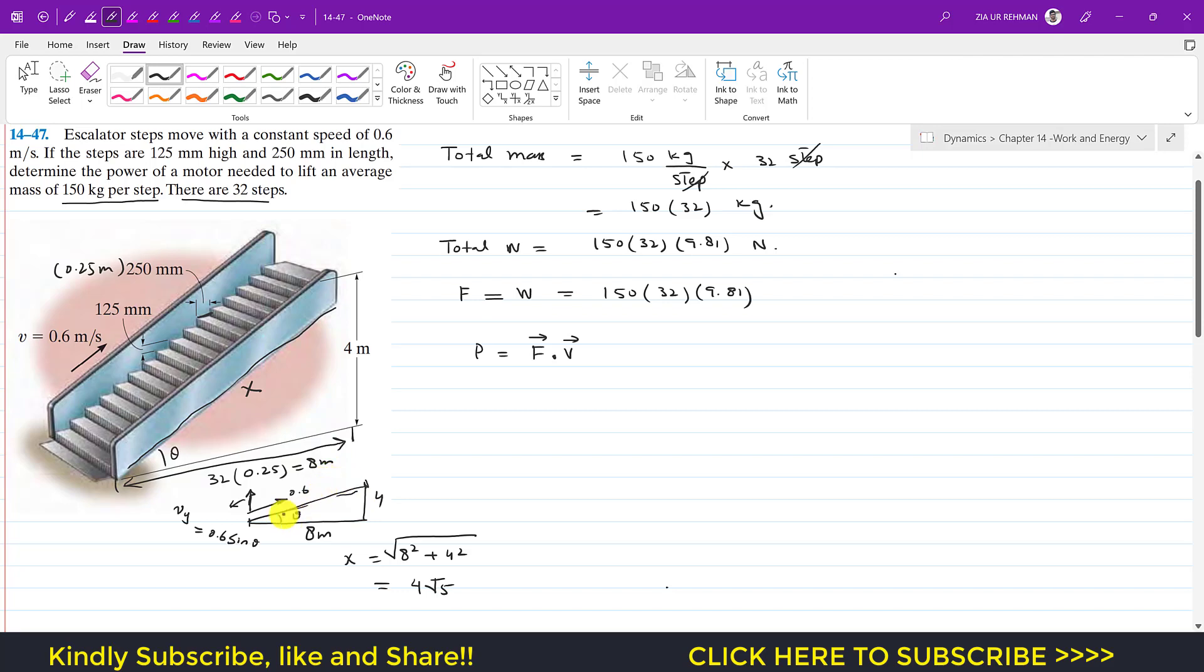From that we can write that vy is 0.6 sine of theta. Sine of theta from this triangle is perpendicular divided by hypotenuse, and the hypotenuse is 4 square root 5. So this is the component of the velocity in the direction of that force F.